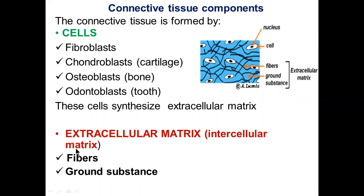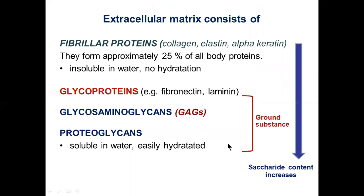The extracellular matrix consists of fibrillar proteins: collagen, elastin, and alpha-keratin. The clear, fluid-like component contains glycosaminoglycans and proteoglycans and is called ground substance.